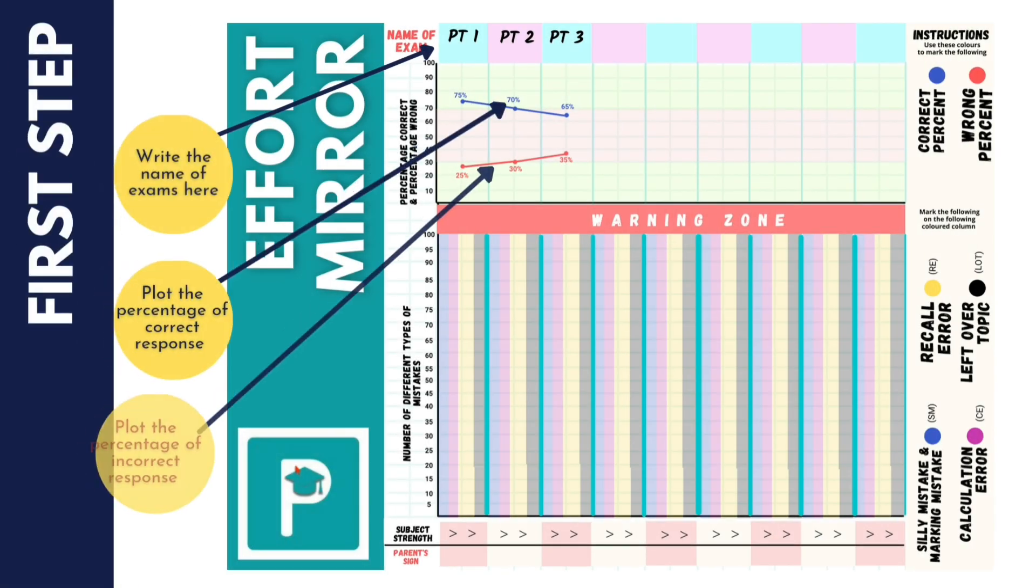Firstly, if we go through the Effort Mirror page, we can see there's a column for percentage correct and percentage error. Here you have to plot the percentage of correct answers in blue and the percentage of incorrect responses in red, which should definitely be lower compared to the correct ones.